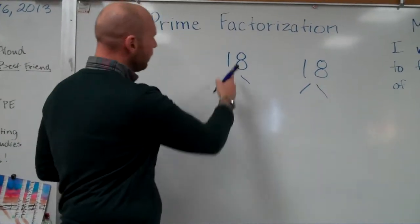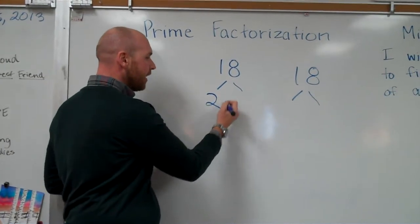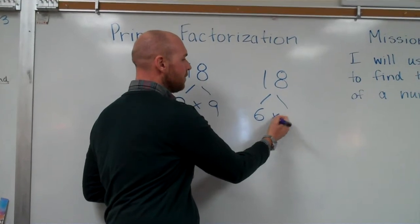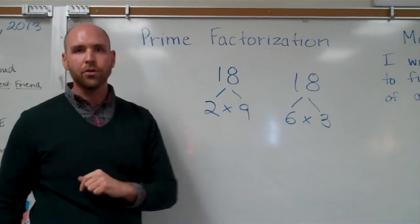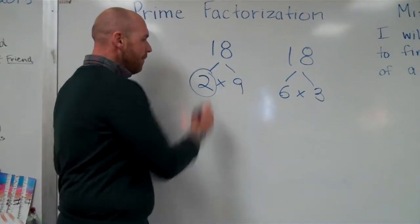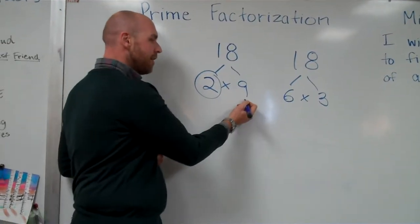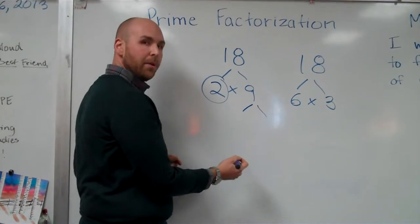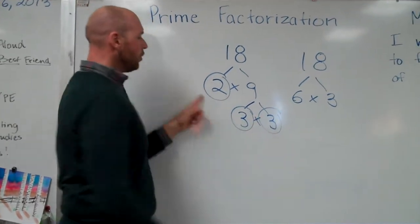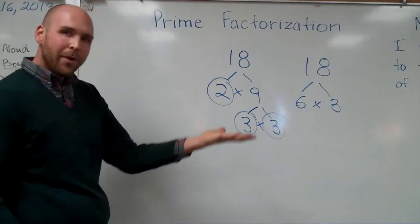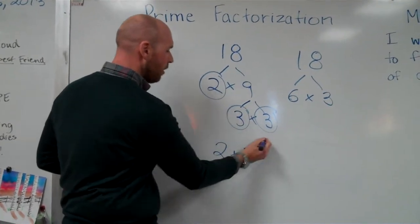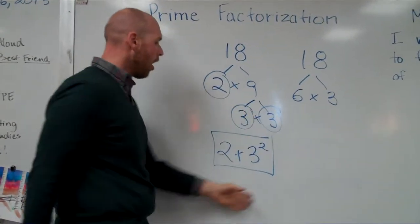Okay. Welcome back. So we have one way that I can think of is 2 times 9. Another way is 6 times 3. Different, but both correct. And I'm going to show you why. 2 is already prime. There we go. I have to break apart 9 because it is not prime. It is composite. 3 times 3. I've got 2 times 3 times 3. How do I write it? 2 times 3 squared. Beautiful, simple, all done.